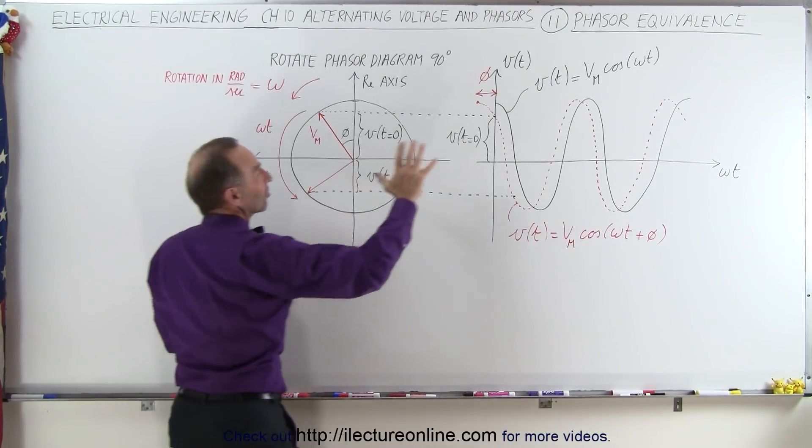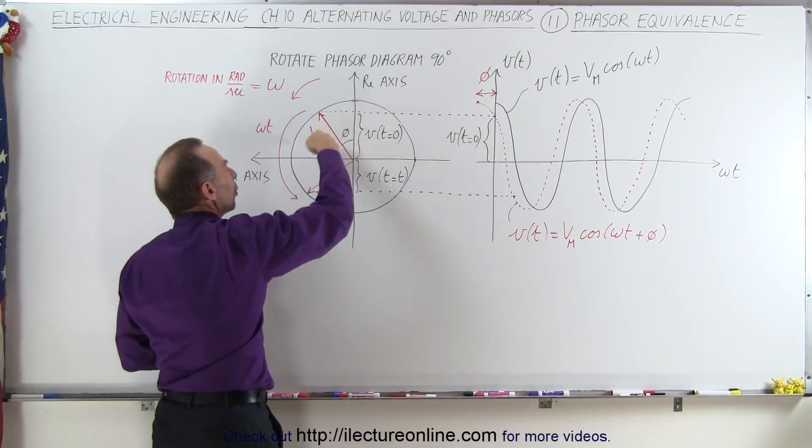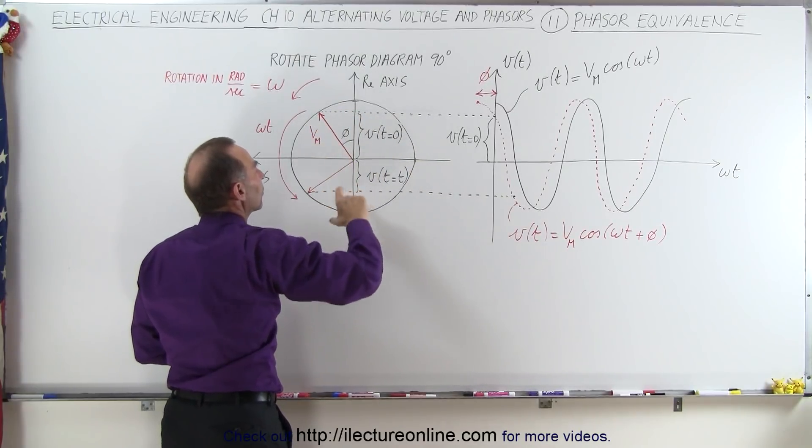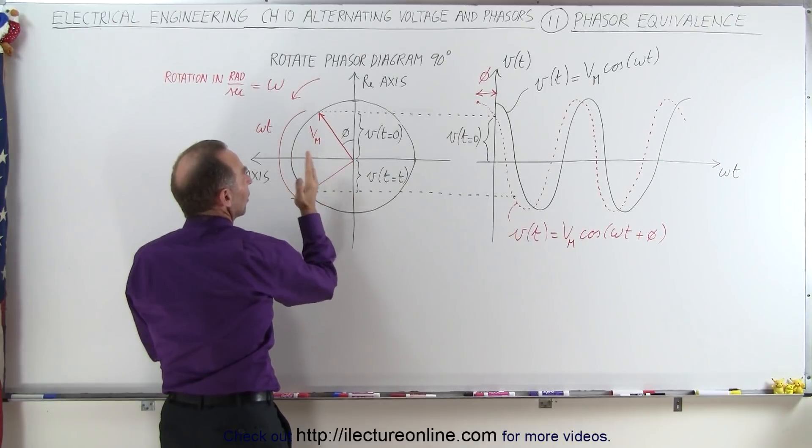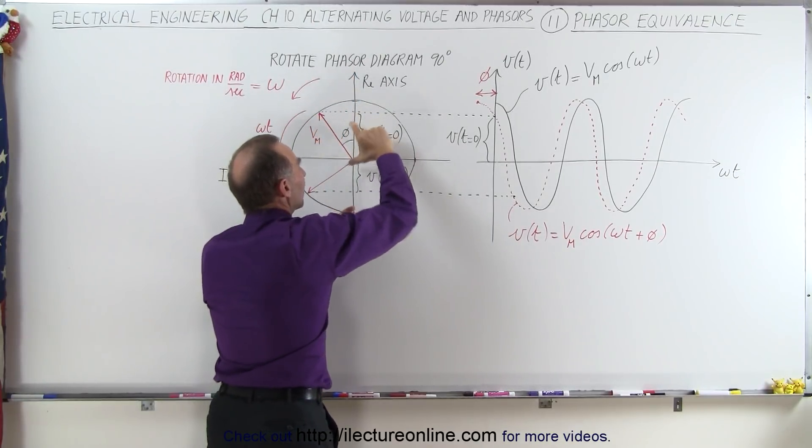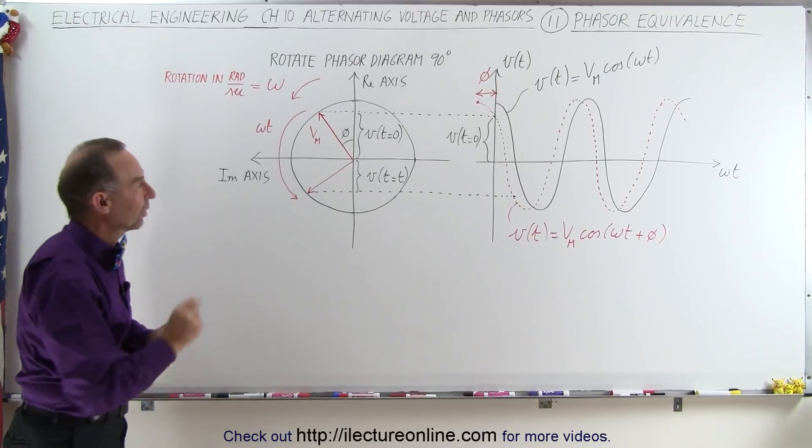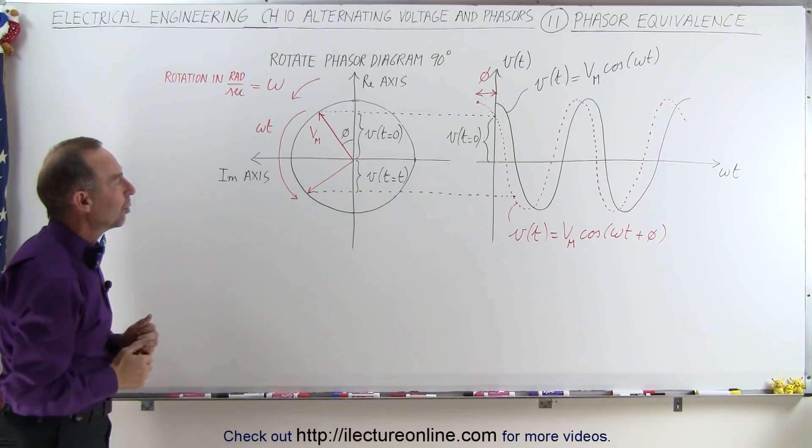The phasor diagram represents a sinusoidal diagram by simply rotating the phasor around the diagram, and the vertical component, or the reflection of the vector onto the real axis, is what gives you the momentary or instantaneous voltage at that moment in time.